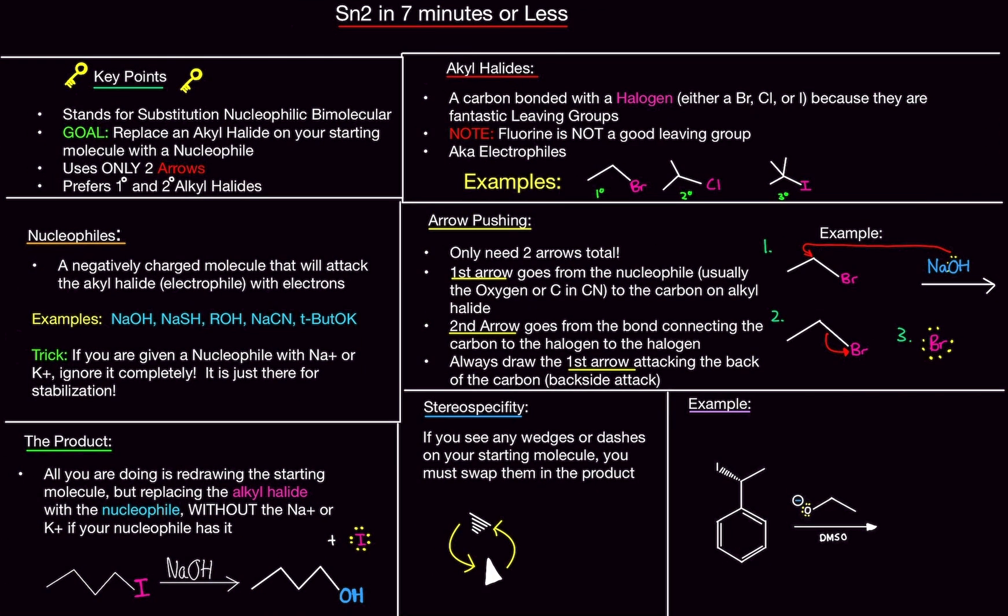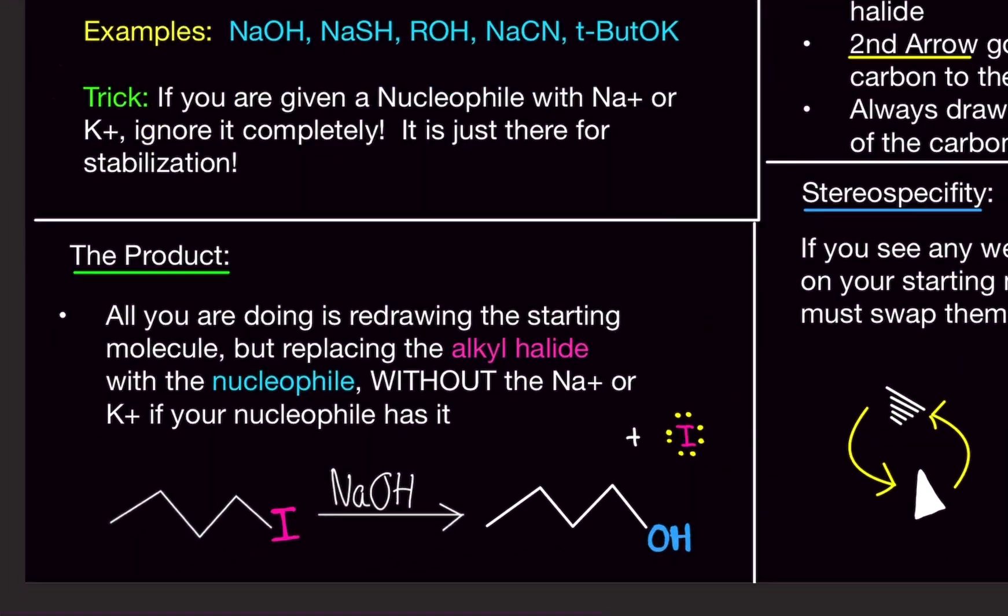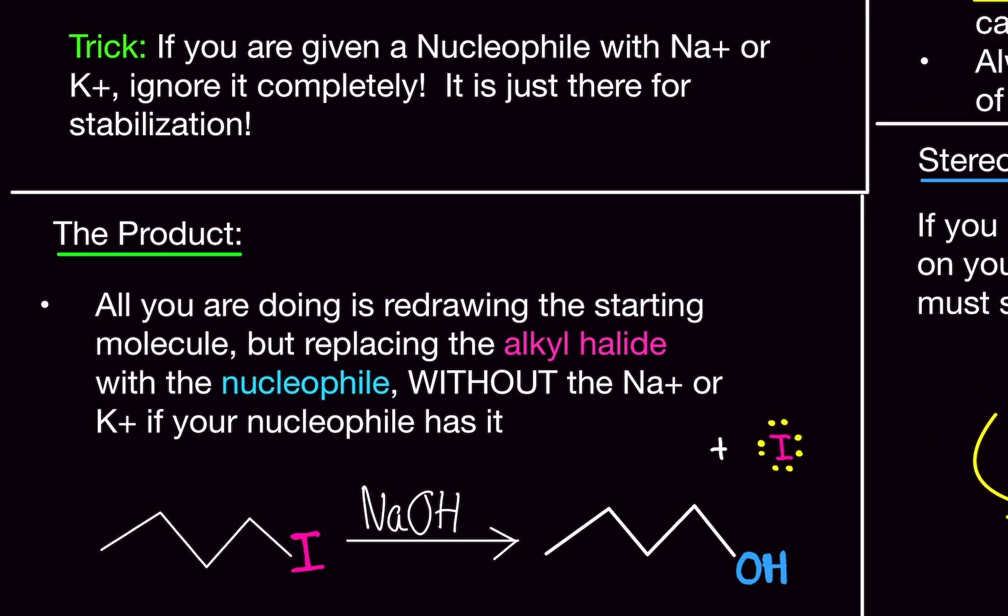So, that is what's basically happening with arrow pushing. So, the product, what are we actually doing here? All you're doing is redrawing the starting molecule by replacing the alkyl halide with the nucleophile. So, without the sodium or potassium attached to your nucleophile.